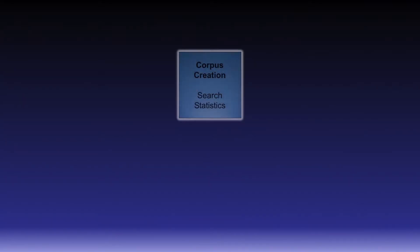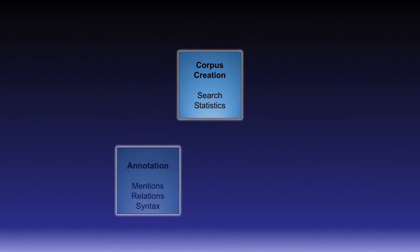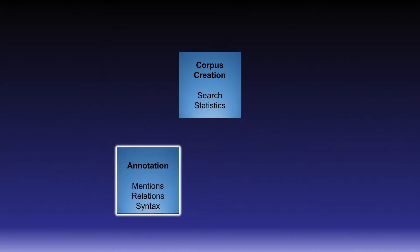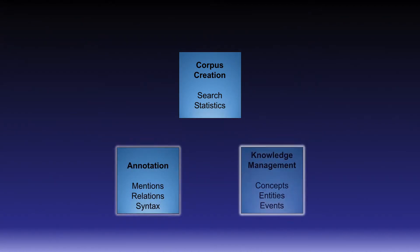Inception integrates three areas of functionality which are essential to text annotation: compiling a corpus of text documents for annotation, annotating the text documents, and managing knowledge to which the text can be connected.